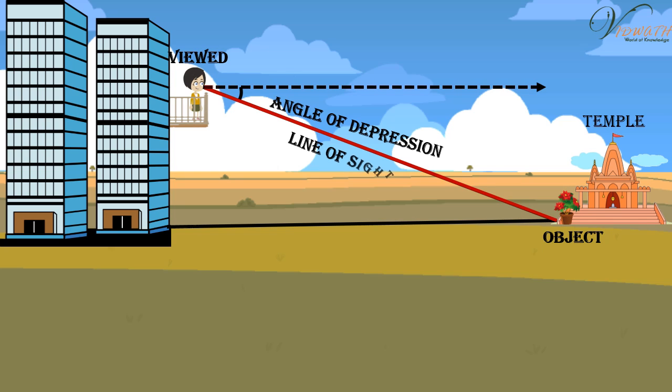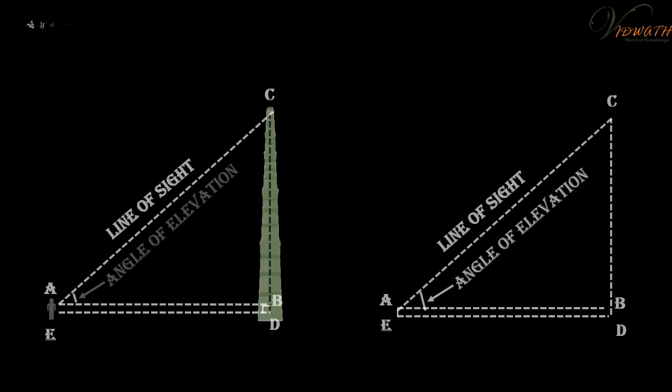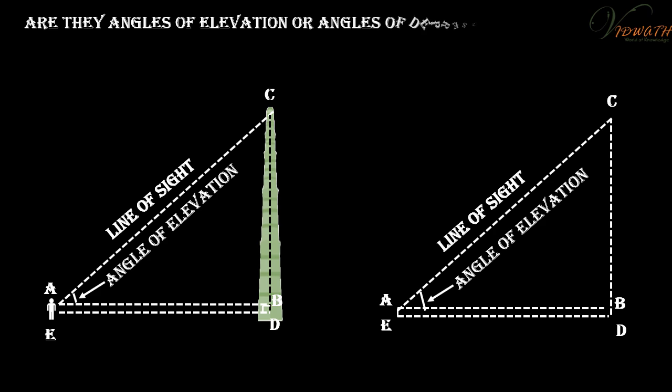That is the case when we lower our head to look at the point being viewed. Are the angles of elevation or angles of depression? If you want to find the height CD of the minar without actually measuring it, what information do you need?